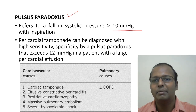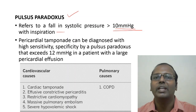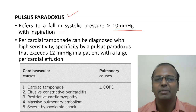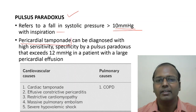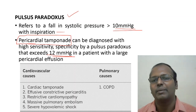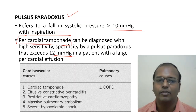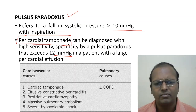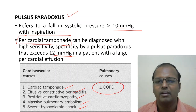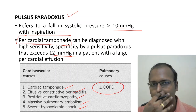Pulsus paradoxus refers to a fall in systolic blood pressure of more than 10 mmHg with inspiration — recall that up to 10 mmHg fall during inspiration is normal. Pulsus paradoxus exceeding 12 mmHg diagnoses pericardial tamponade with high sensitivity and specificity in patients with large pericardial effusion. Cardiovascular causes include cardiac tamponade, constrictive pericarditis, restrictive cardiomyopathy, pulmonary embolism, and hypovolemic shock. Pulmonary causes include COPD and acute exacerbation of COPD.